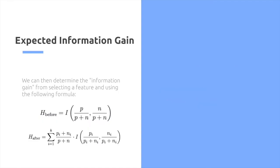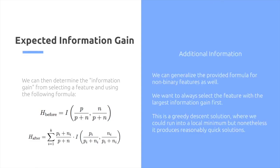With that said, then we can determine the information gain that we can have by effectively determining how much the entropy decreases by. By decreasing the amount of surprise, then we can basically determine which feature is better to test. So we can generalize the provided formula for non-binary features as well, and this gives us a gradient descent solution. We try different features, and for each feature, we pretty much determine what the expected information gain would be.